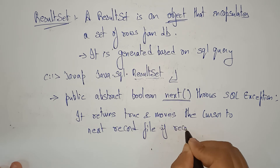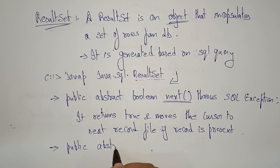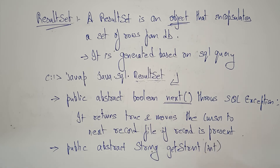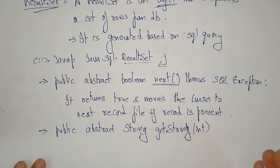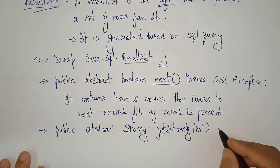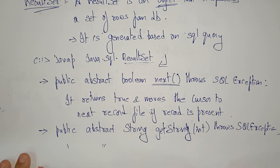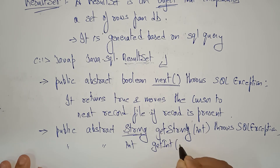If a record is present it returns true; otherwise it returns false. The next method I'm taking is getString(). If you want to retrieve string data — for example, a column named 'name' — you call getString(), which throws SQLException.